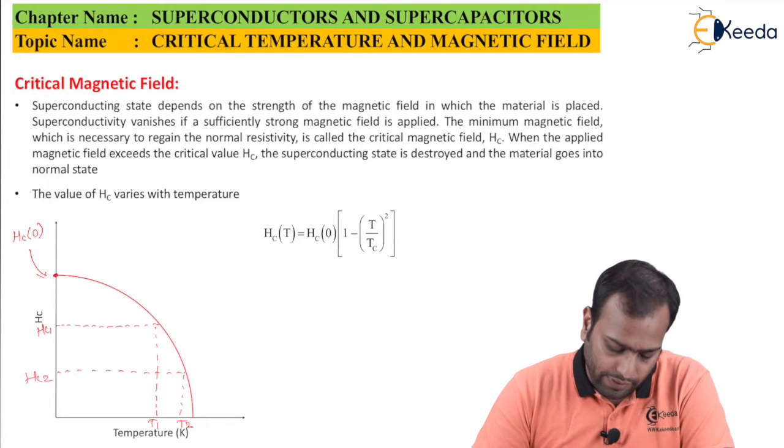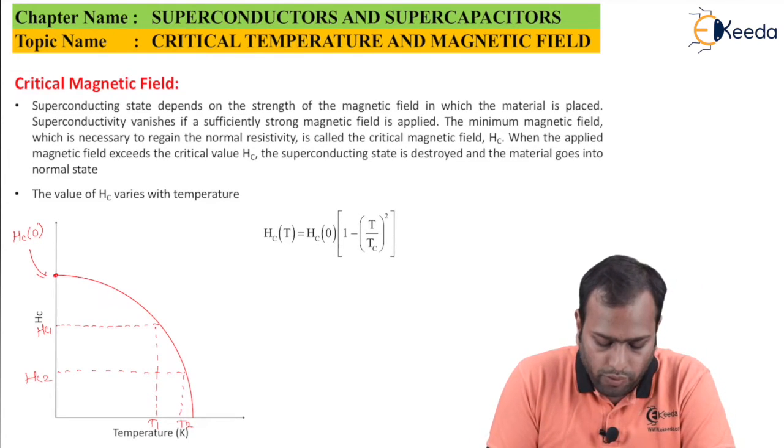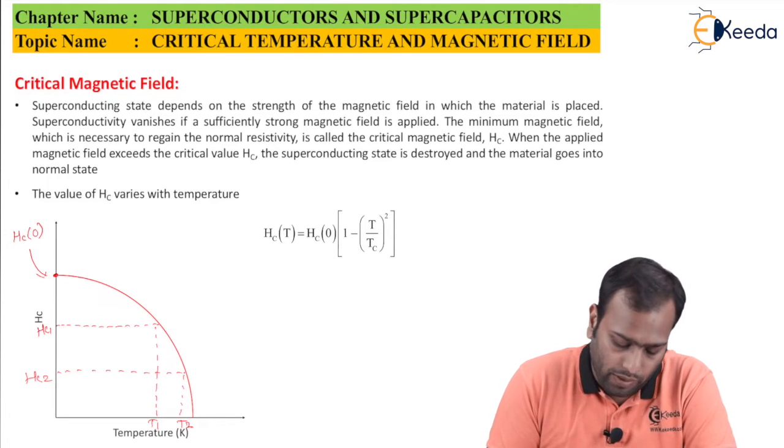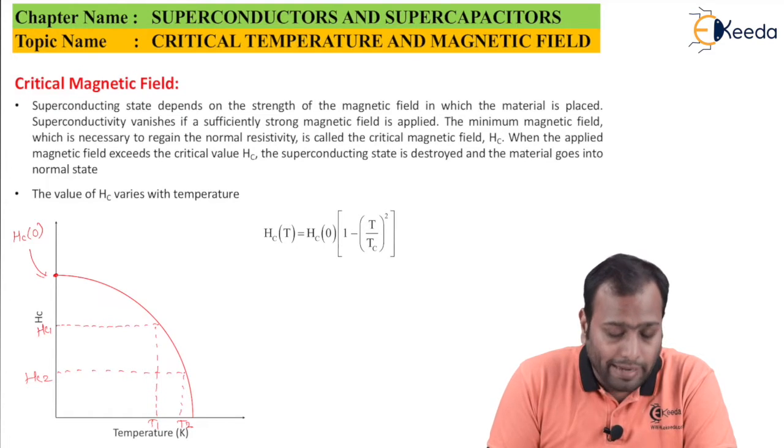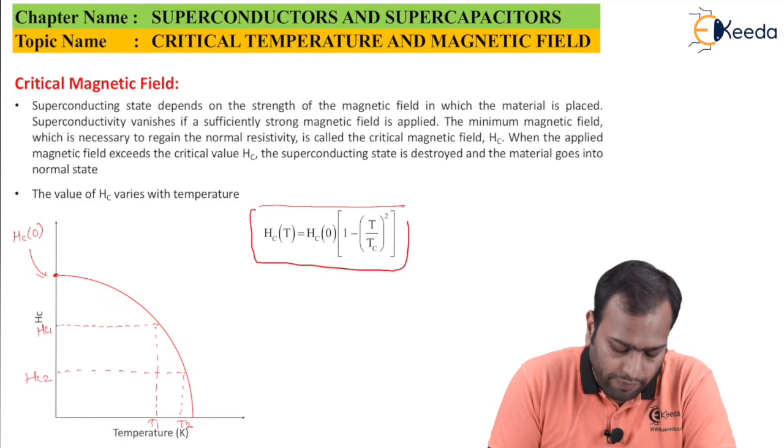Mathematically, this relation is given as HC of T is nothing but HC of 0 into 1 minus T by TC, the whole square. There could be numericals asked from this relation. So make sure you know this formula very well.